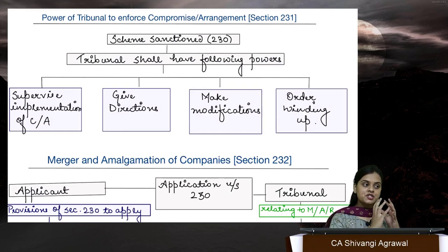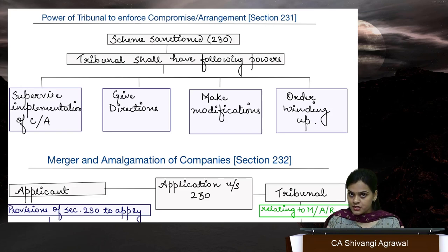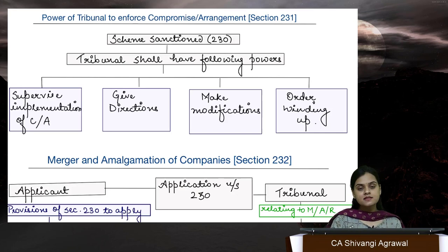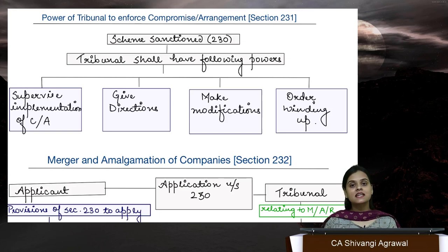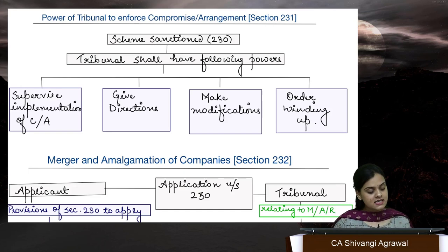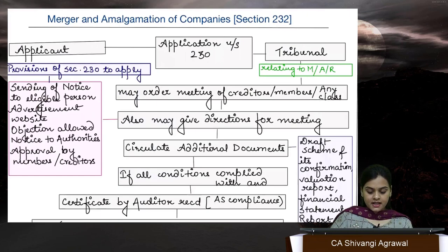Section 231: The tribunal has sanctioned the scheme and has the power to supervise its implementation, make modifications as and when needed, and give directions. If the tribunal finds it is impossible to implement the scheme as sanctioned and the company will not be able to pay its debts — meaning the company is in a kind of insolvency state — then in such a situation, the tribunal might pass winding-up orders, that is, closing down the company.